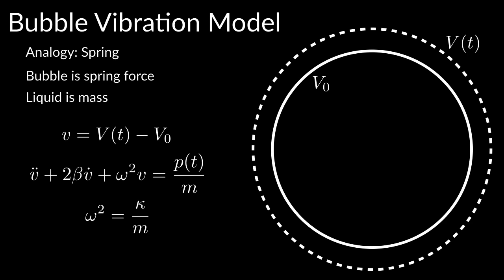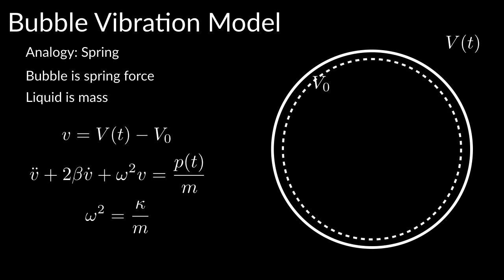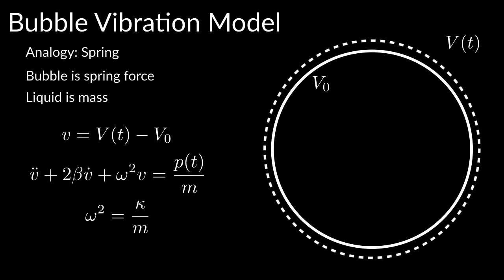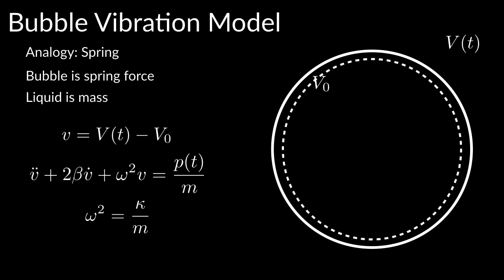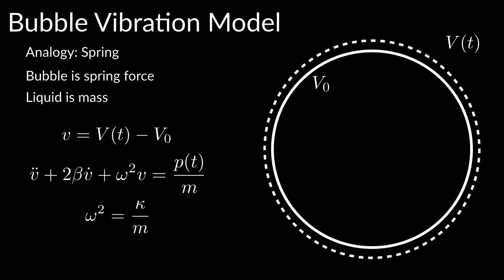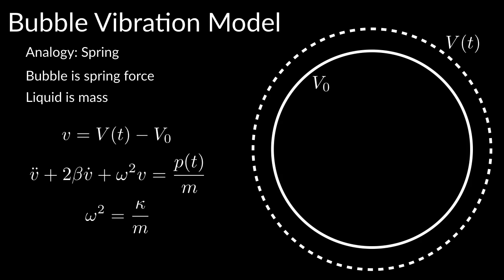The volume oscillations of a bubble can be modeled as a damped harmonic oscillator, i.e. a spring. The internal gas of the bubble and the surface tension at its wall provide the restoring force, while the surrounding liquid is the mass. The frequency of the oscillator, omega, depends on the stiffness and the mass.